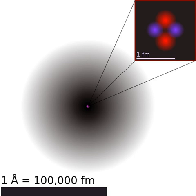Only a discrete or quantized set of these orbitals exist around the nucleus, as other possible wave patterns rapidly decay into a more stable form. Orbitals can have one or more ring or node structures, and differ from each other in size, shape, and orientation.